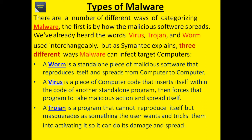Malware can be categorized by how it spreads. A worm is a standalone piece of malicious software that reproduces itself and spreads from computer to computer. A virus is a piece of computer code that inserts itself within the code of another program, then forces that program to take malicious action and spread itself. A Trojan is a program that cannot reproduce itself but masquerades as something the user wants, tricking them into activating it so it can do its damage.